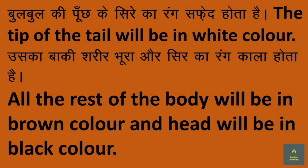Bulbul ki punch ke siray ka rang safid hota hai. The tip of the tail will be in white colour. Uska baaki shareer boora aur sirr ka rang kaala hota hai. All the rest of the body will be in brown colour and the head will be in black colour.